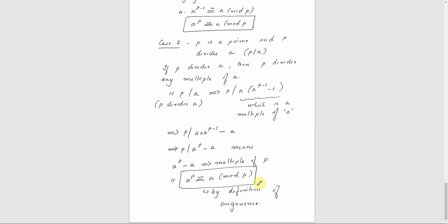So this is the proof of Fermat's theorem. In the first case and second case, both give A raised to P is congruent to A mod P, which is the corollary result.